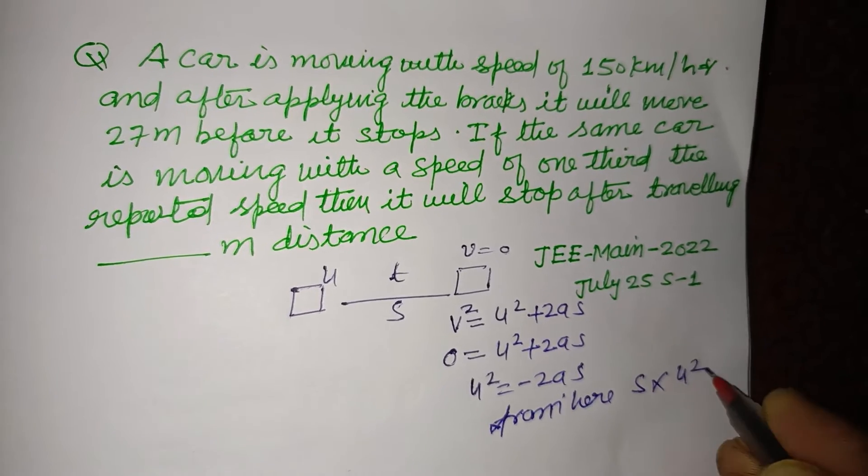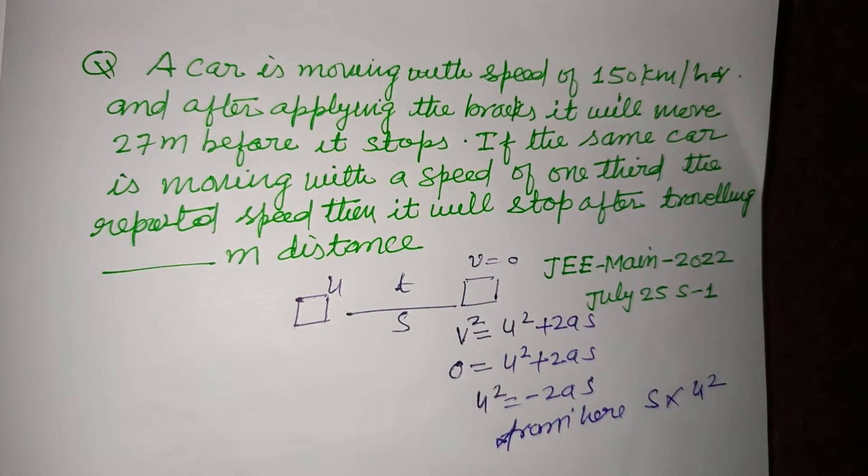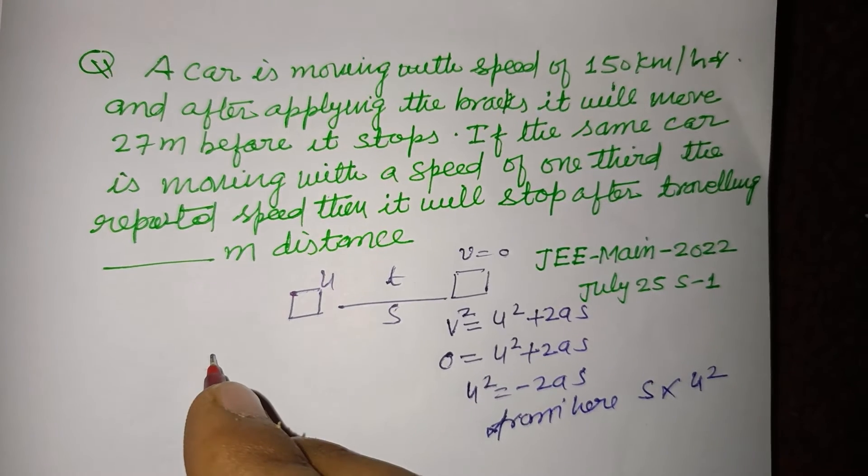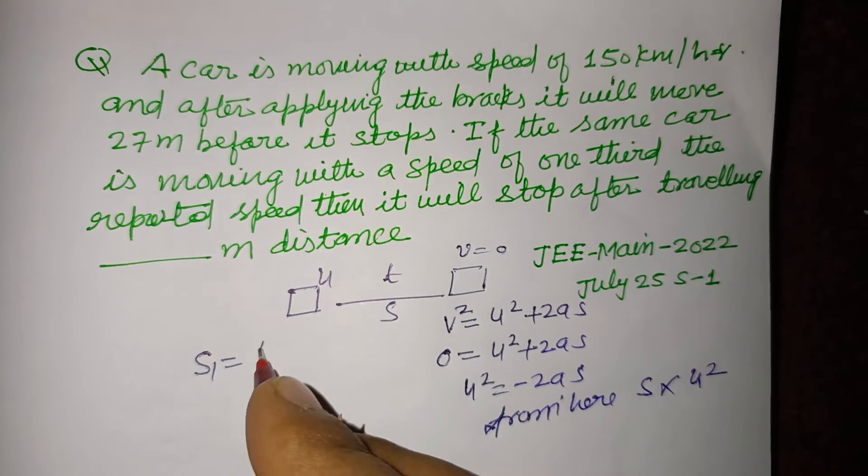s is directly proportional to u square, so when s1 equal to u1 square, s2 equal to u2 square.